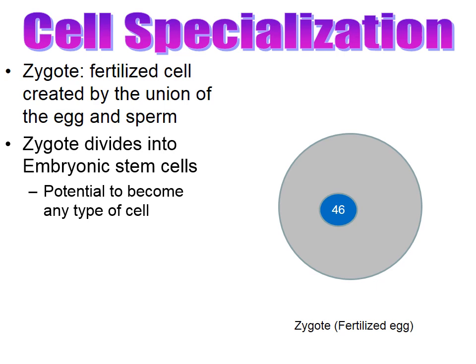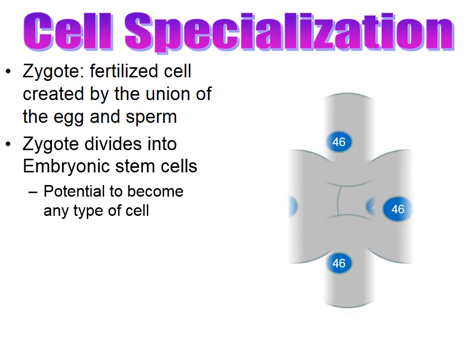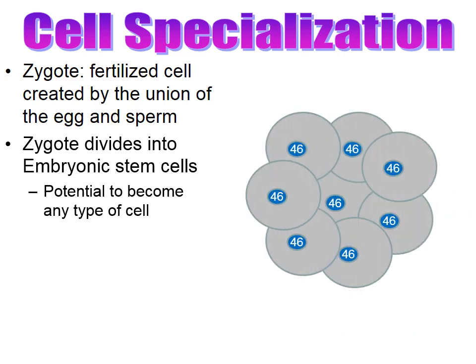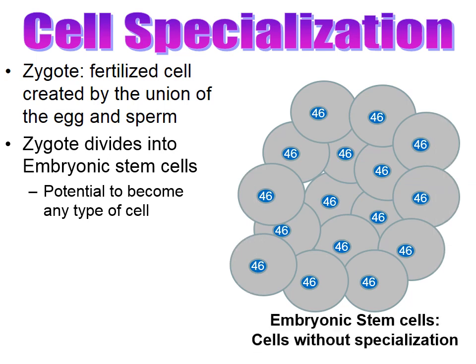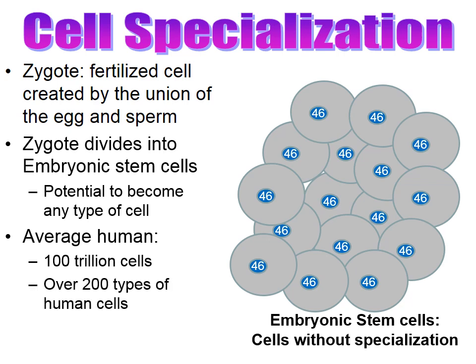That zygote is going to divide by the process of mitosis, where the one-cell zygote divides and becomes two cells. The two divide by mitosis to make four, the four become eight, the eight becomes 16. What we end up getting is this lump of cells called embryonic stem cells. Embryonic stem cells have the potential to become any type of cell in the body — they are cells that lack specialization. As a woman's pregnancy continues and a baby is eventually born, the average human is made up of around 100 trillion cells with over 200 different kinds, and we can trace all 200 types back to embryonic stem cells.